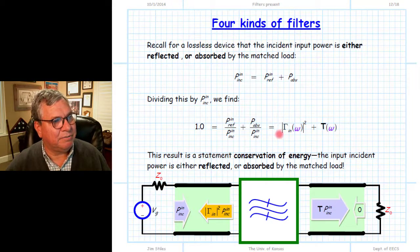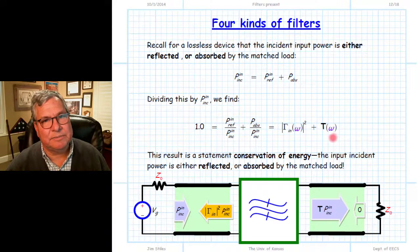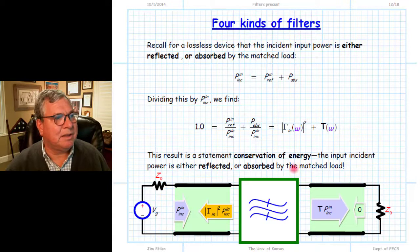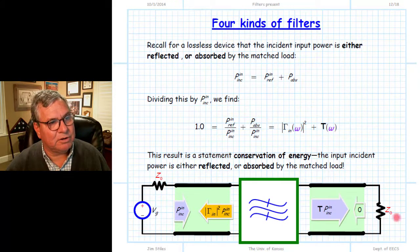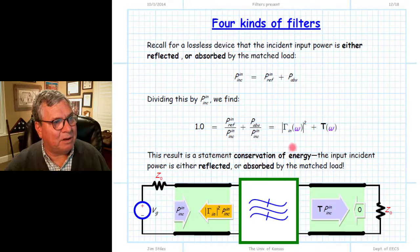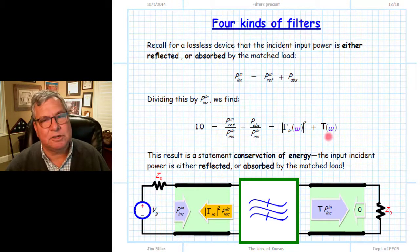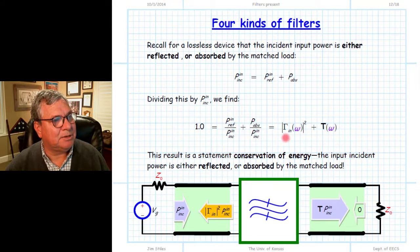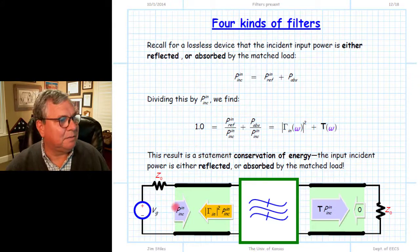For example, if |Γin|² = 0.4, then T must equal 0.6: 40% of incident power is reflected and 60% is absorbed. If |Γin|² = 1, then T = 0 — all incident power is reflected and none passes through the filter; that is the ideal stop band case. Conversely, if |Γin|² = 0, nothing is reflected and T = 1 — all incident power is absorbed; that is the ideal pass band case. This simply states that the percentage reflected plus the percentage absorbed must equal 100% of the power available from the source.